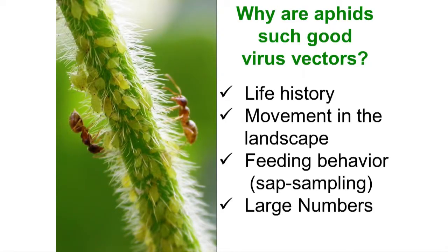So just a summary — why are aphids the best virus vectors out there? They have a life history where they move around a lot; they can move across the landscape. They have their baby-making machines that produce huge numbers, as well as the winged morphs that can fly. They sap sample — sticking their mouthparts into a lot of places where they shouldn't, which exposes them to many different viruses. And then there are just huge numbers of them.